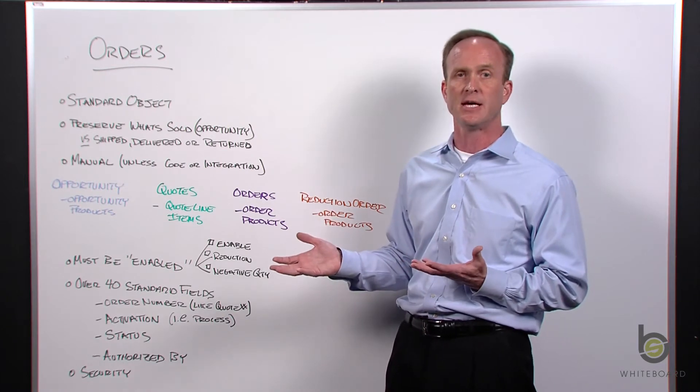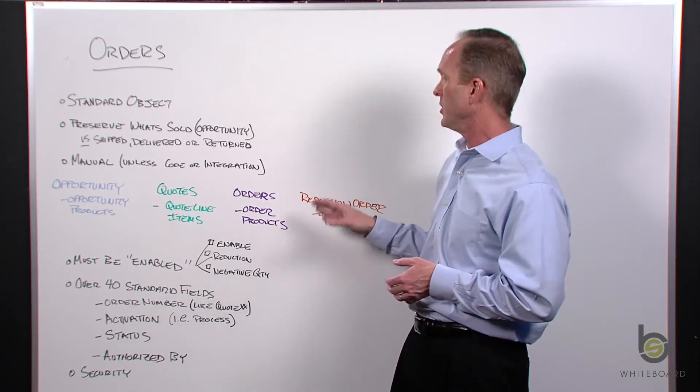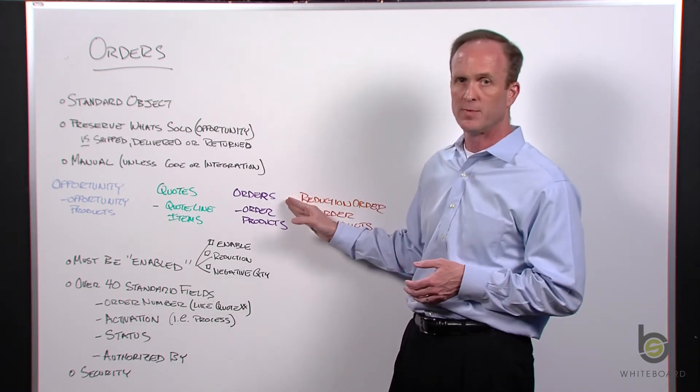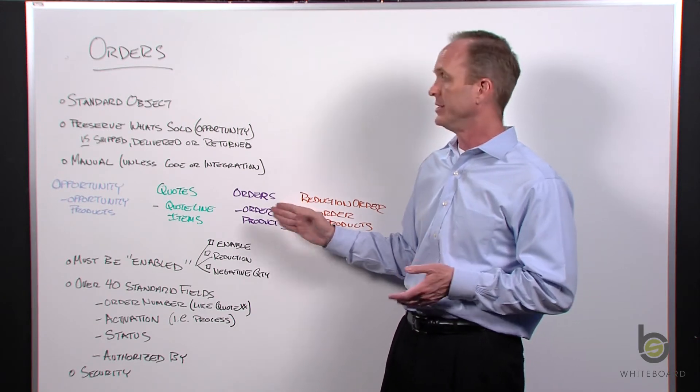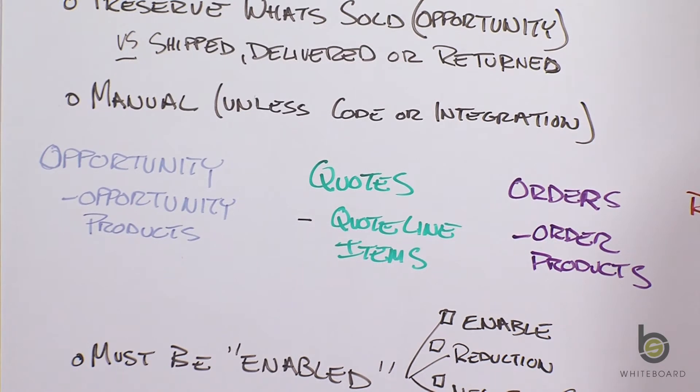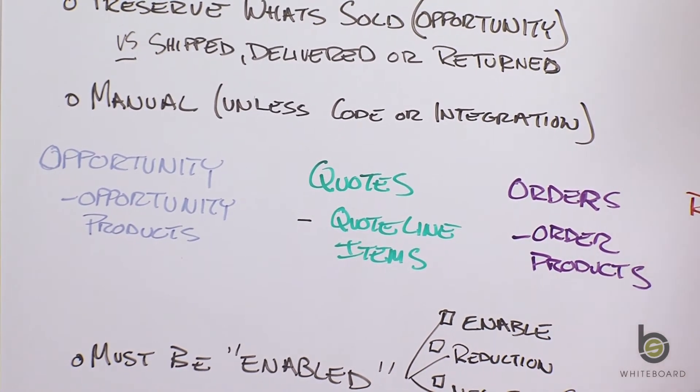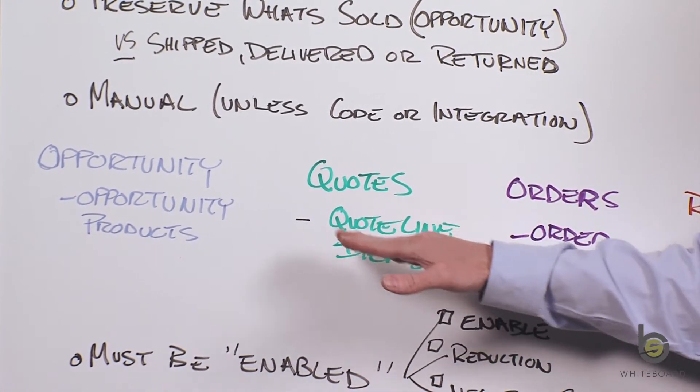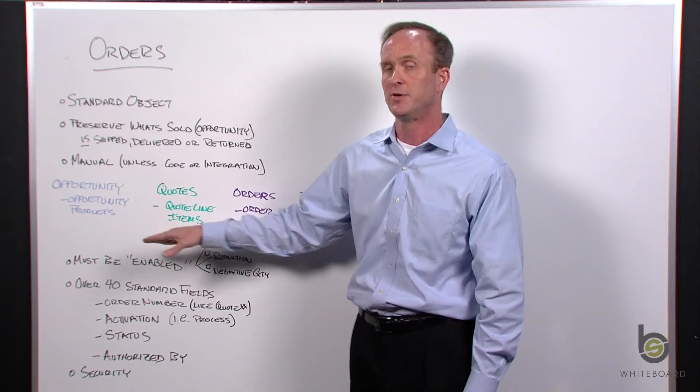When you go to an order and want to add a product, just like an opportunity or quote, it's going to ask you to pick a price book and then search for a product, just like you would in the quote module or the opportunity module.